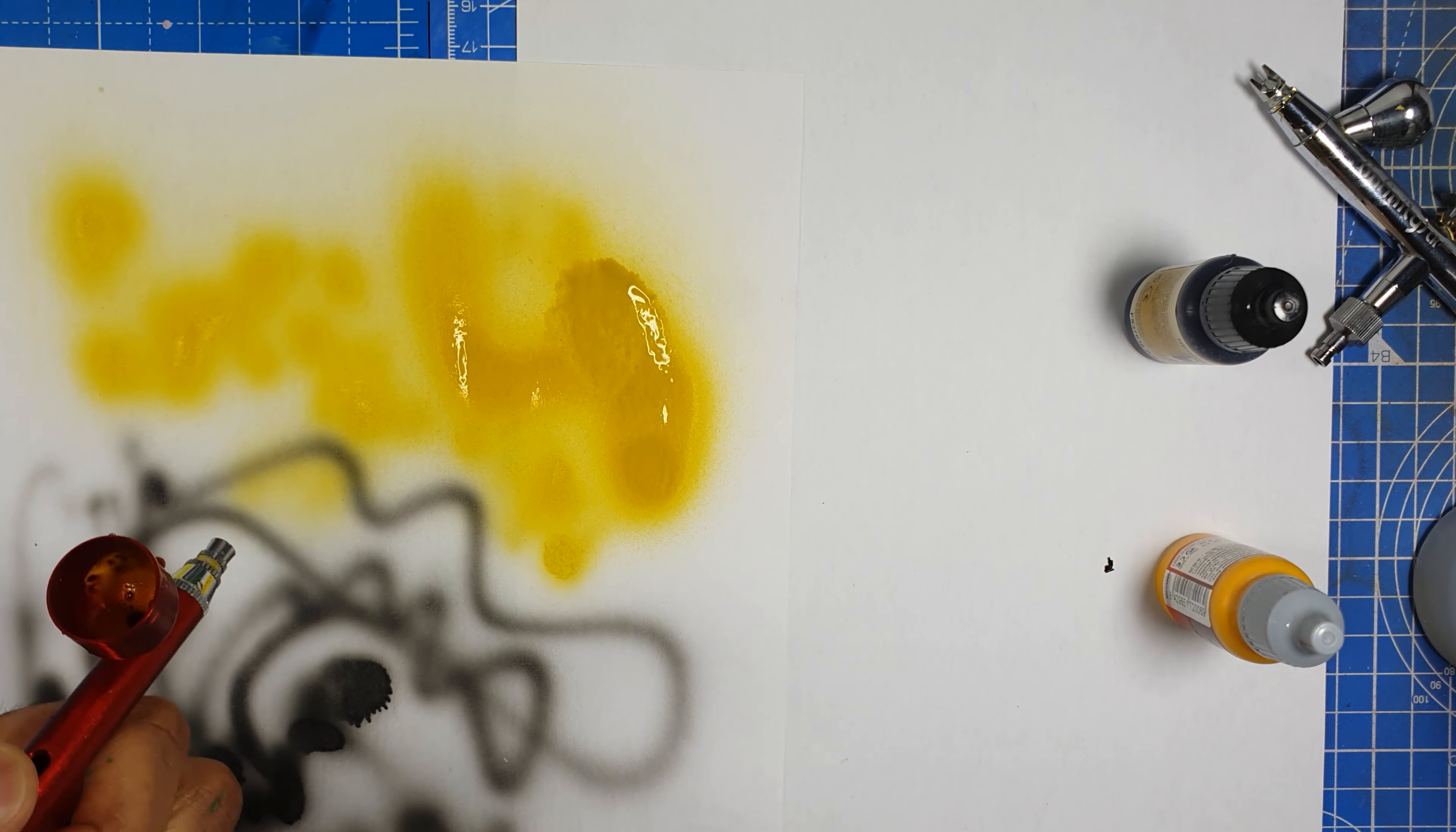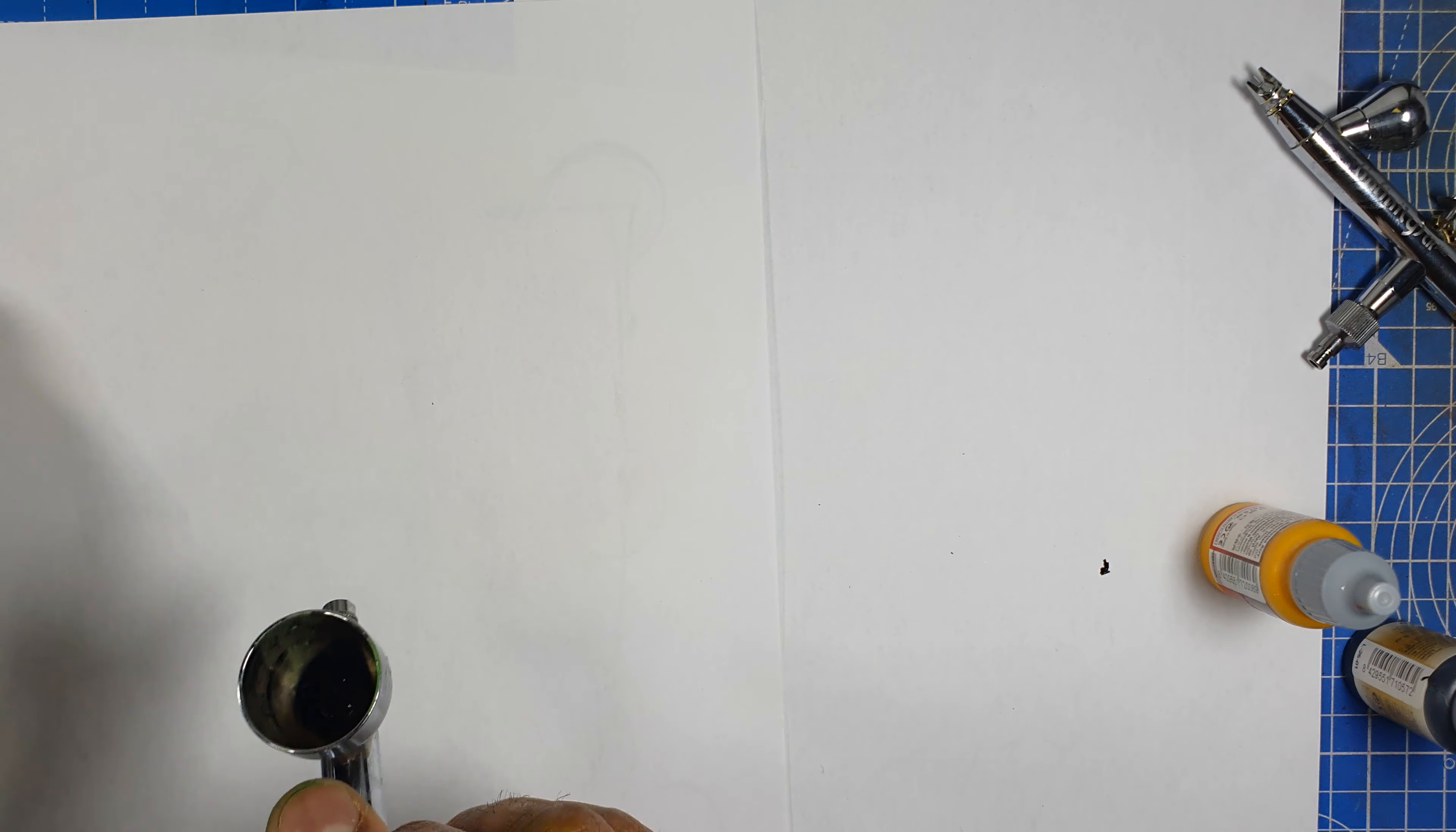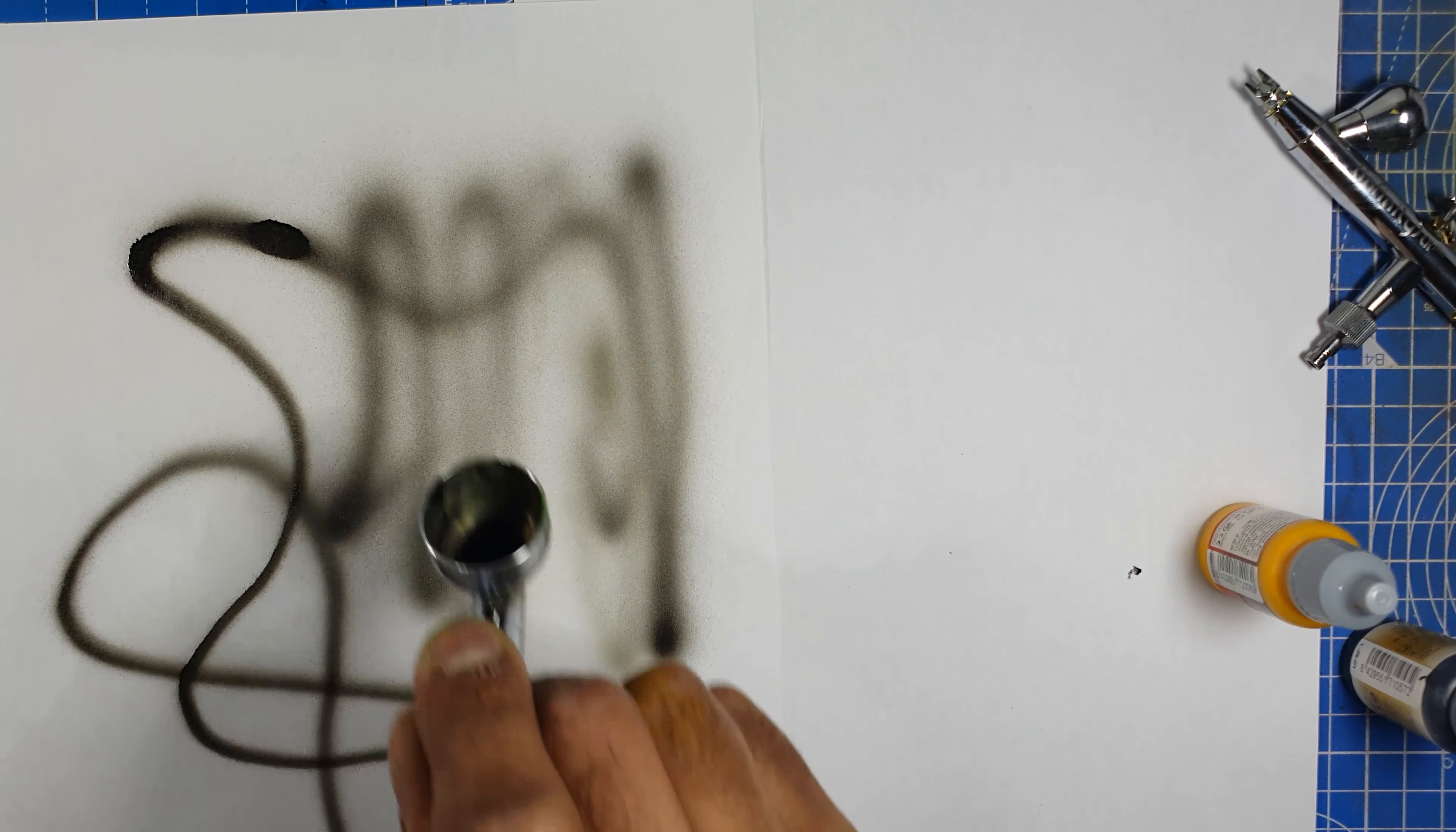So now what we'll do, we'll try the Iwata. So now what I've done is I've put a bit of flow improver in there and we've got some black. We'll mix it up. Get another piece of paper. So let's check this out. See, as I'm pressing down, it's just air coming out. And then as I pull the trigger, the black paint comes out. Bit of yellow in there still, but it's clear. So that's the only advantage.